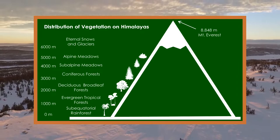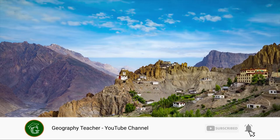Also, depending on the increase in altitude, human settlements are distributed, but that distribution is different going from the equator to the poles.